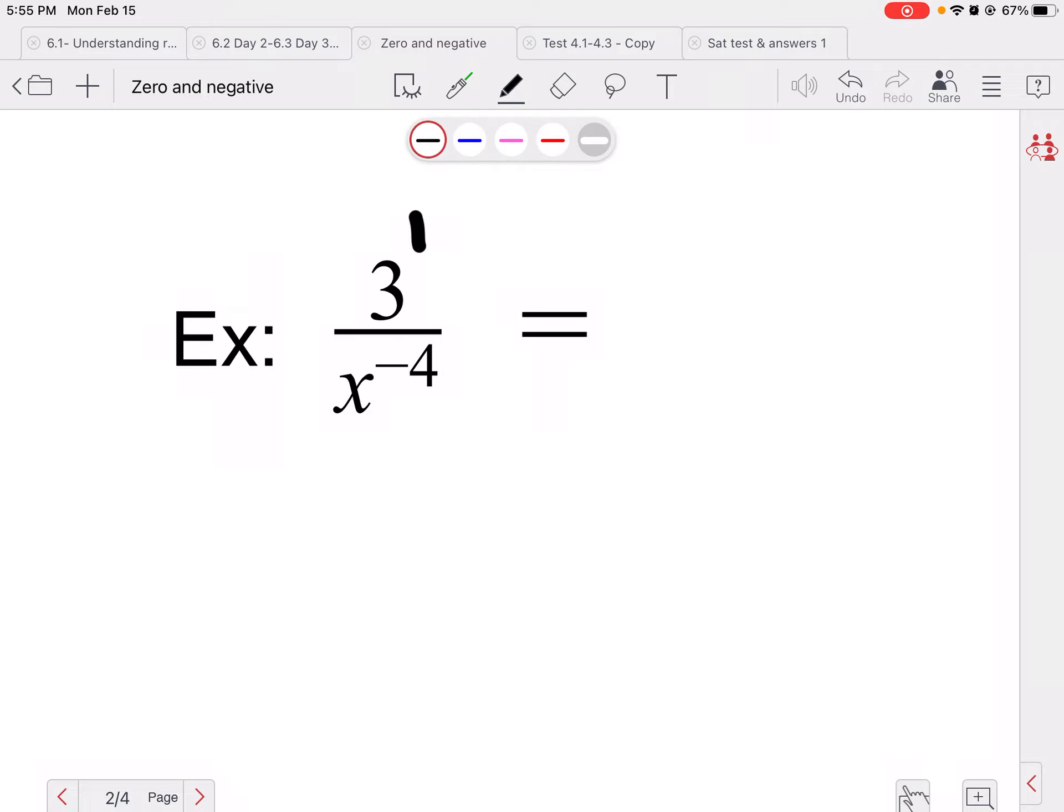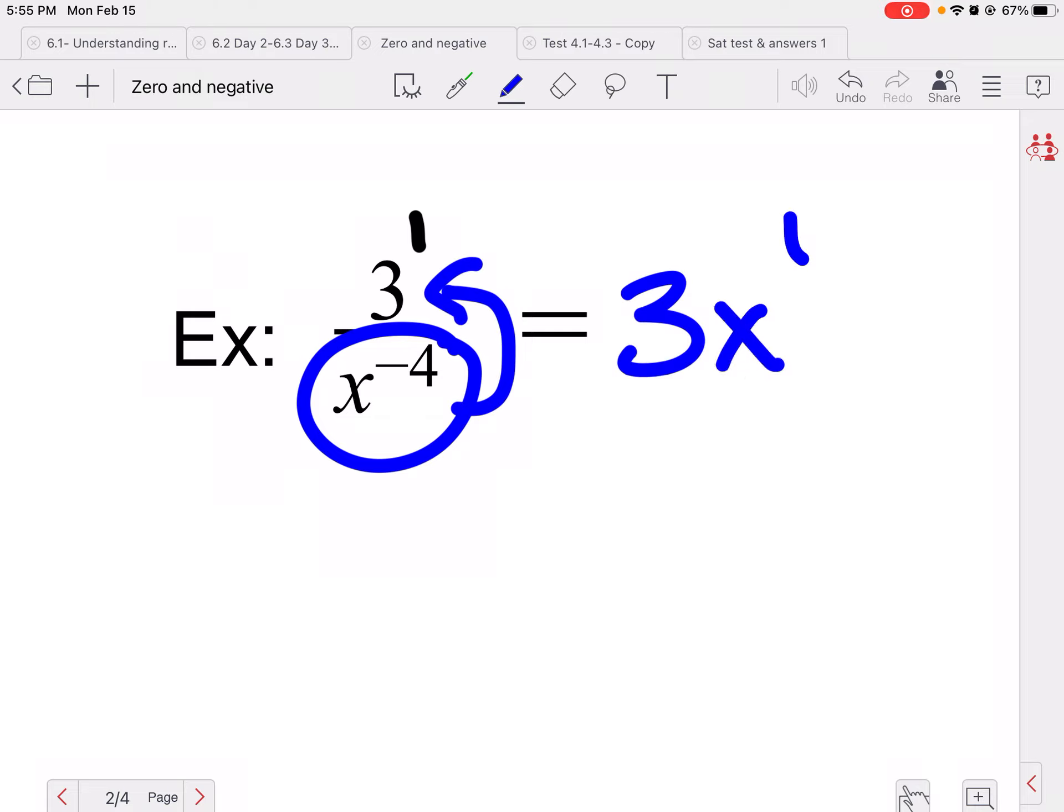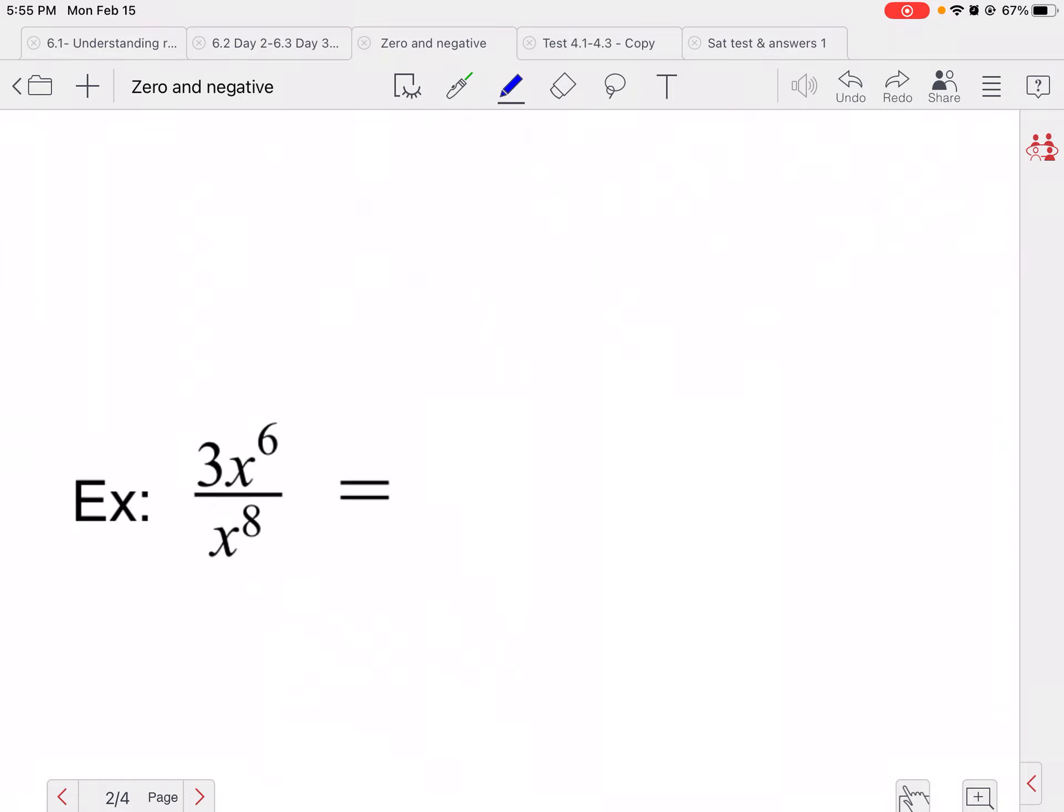Now, let's look at another example here. 3 over x to the negative four. Three has an invisible one exponent. Anytime something doesn't have an exponent, there's always an invisible one. So the only thing with a negative exponent is x to the negative fourth. Well, if it's in the denominator, we can move it up to the numerator. And the 3 is going to stay because it doesn't have a negative exponent, so it doesn't need to move. And we could put this over one since we moved it out of the denominator, but you don't have to. They mean the same thing.